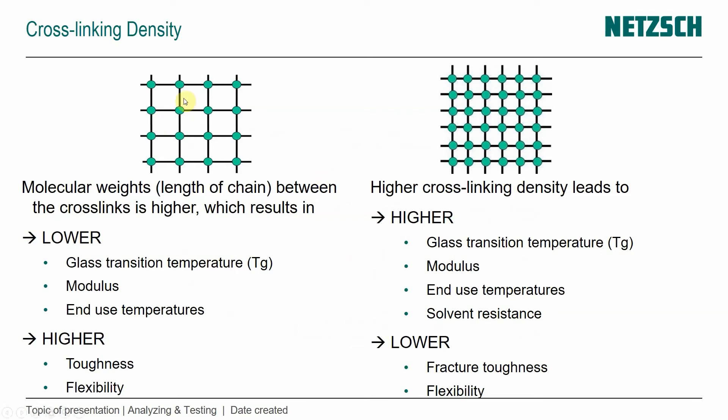So when we have a structure where the molecular weight between the cross-links is higher, so we have a looser packing, a looser density of the covalent bonds, the resulting material has a lower glass transition temperature, lower modulus, and thus lower end-use temperature, but it is a little bit more tough and more flexible. Again, in the range that a thermoset is able to vary.